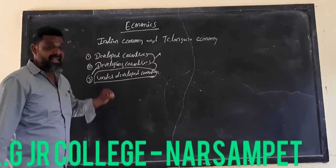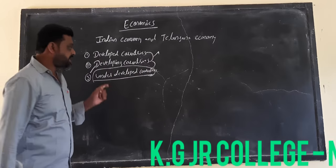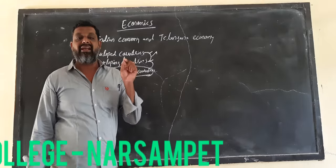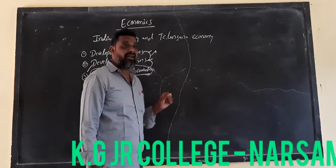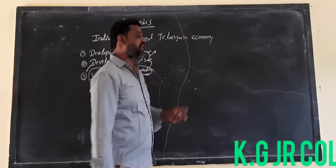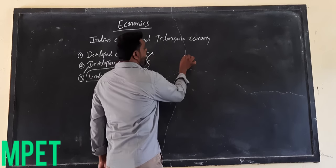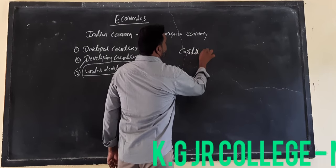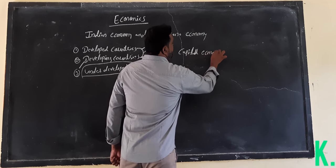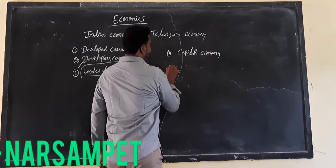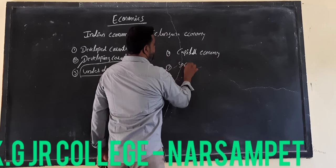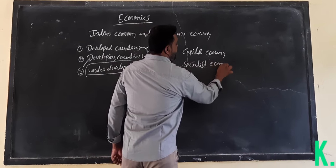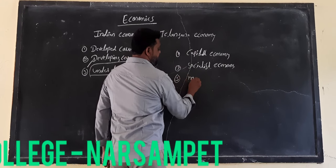Now the developed countries and developing countries are using different types of economies. How many types of economies are there? There are three types of economies in the worldwide: Capitalist Economy, Socialistic Economy, and Mixed Economy.